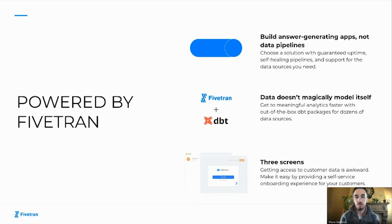The second is a very important part of the data access process that happens after data is accessed: transformations. Data doesn't magically model itself. You want to land data in your warehouse and get as quickly as possible to meaningful analytics. The thing I'll call out here are Fivetran's dbt packages, which we have for dozens of data sources and are continuing to build out. What these do is take data after it's landed in your destination, apply aggregations, and turn it into the most popular forms of reports for those data sources or combinations of data sources. It may not be everything you need, but it will greatly speed the time for you to get to the analytics you want to provide.